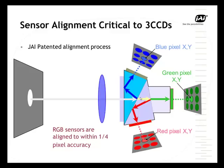One of the more important things to notice is that sensor alignment is critical to the color quality you're going to get. If the sensors are not aligned to within a small fraction of a pixel, then the light falling on each of the sensors may go to different parts of the pixel and may not capture the light accurately. JAI has a patented process where their alignment is to within a quarter-pixel accuracy.